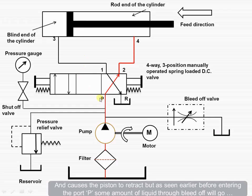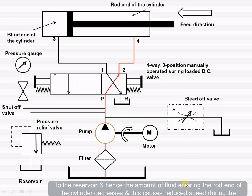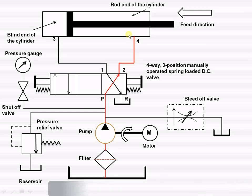Now, before entering into this particular port P, some amount of the liquid through the bleed-off valve will go to the reservoir. Hence, the amount of fluid entering the rod end of the cylinder decreases, and this causes reduced speed during the retraction.